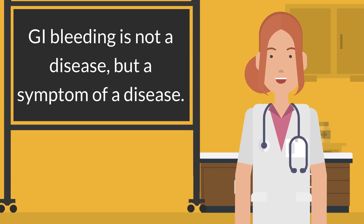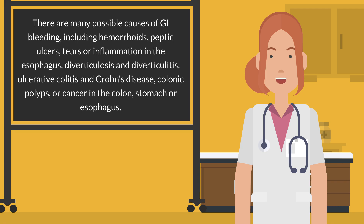G.I. bleeding is not a disease, but a symptom of a disease. There are many possible causes of G.I. bleeding, including hemorrhoids, peptic ulcers, tears or inflammation in the esophagus, diverticulosis and diverticulitis, ulcerative colitis and Crohn's disease, colonic polyps, or cancer in the colon, stomach, or esophagus.